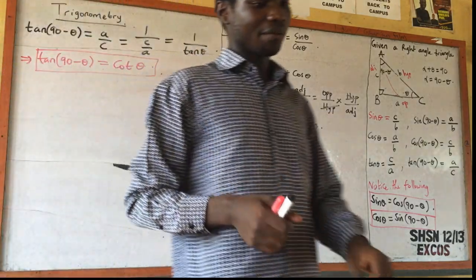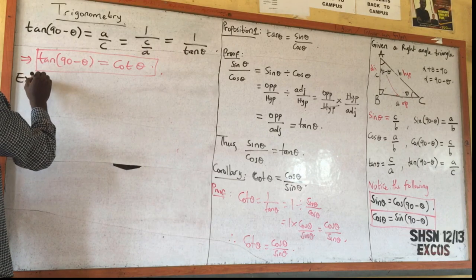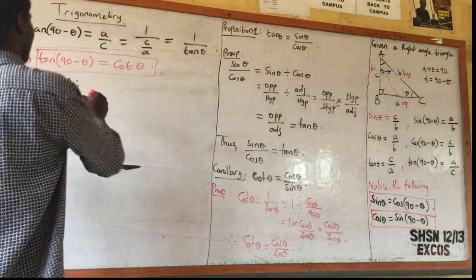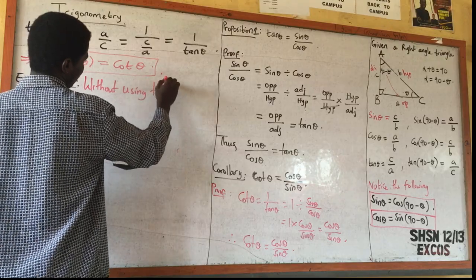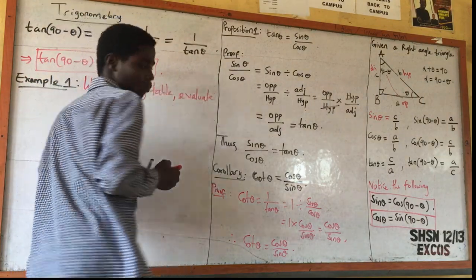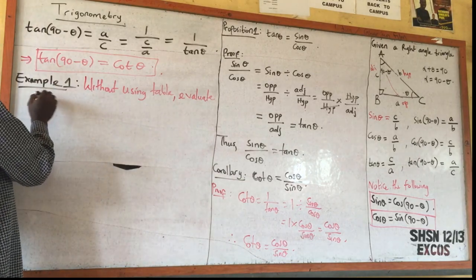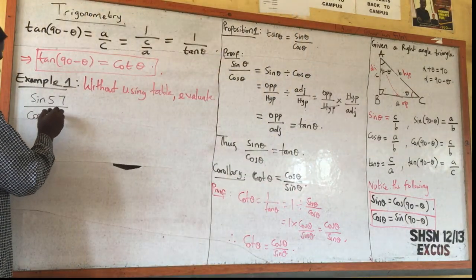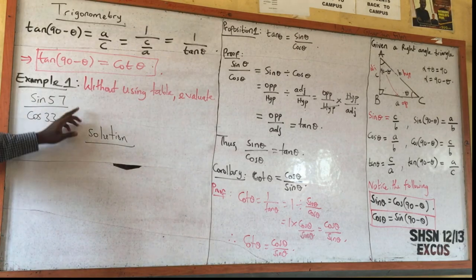Now let us look at some examples. Example 1: Without using tables, evaluate sin 57 divided by cos 33. We want to evaluate sin 57 divided by cos 33. Of course, 57 is not a special angle, and we are told not to use tables or a calculator — so how do we evaluate this?